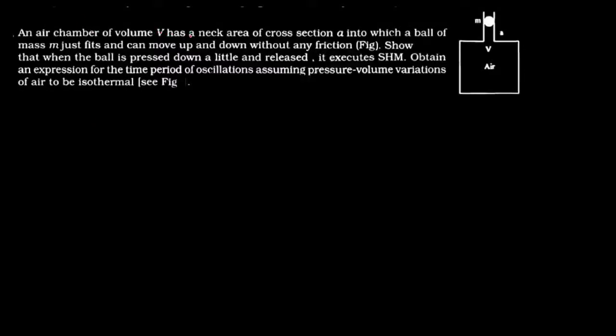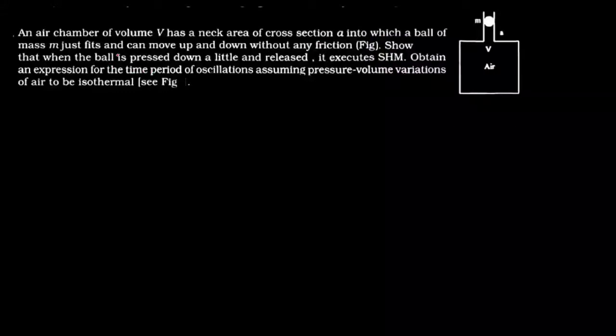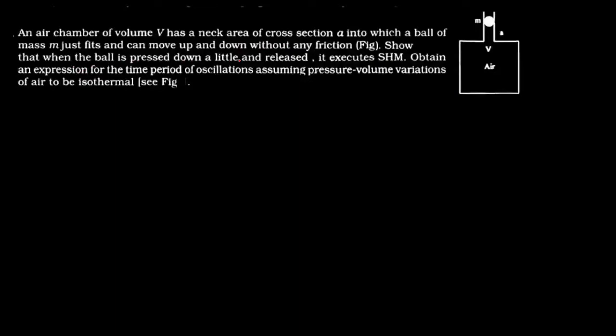An air chamber of volume V has a neck with area of cross section A, into which a ball of mass M just fits and can move up and down without any friction. Show that when the ball is pressed down a little and released, it executes SHM. Obtain the expression for the time period of oscillation, assuming pressure-volume variations of air to be isothermal.